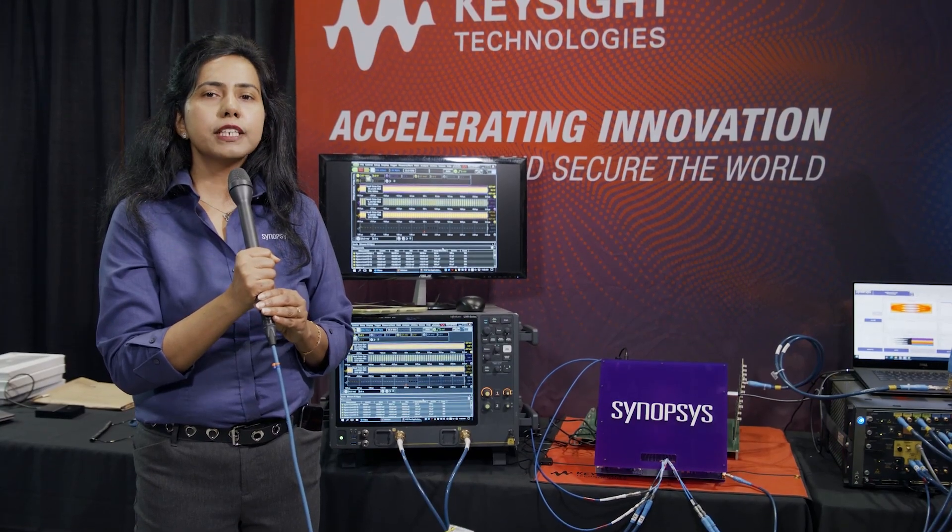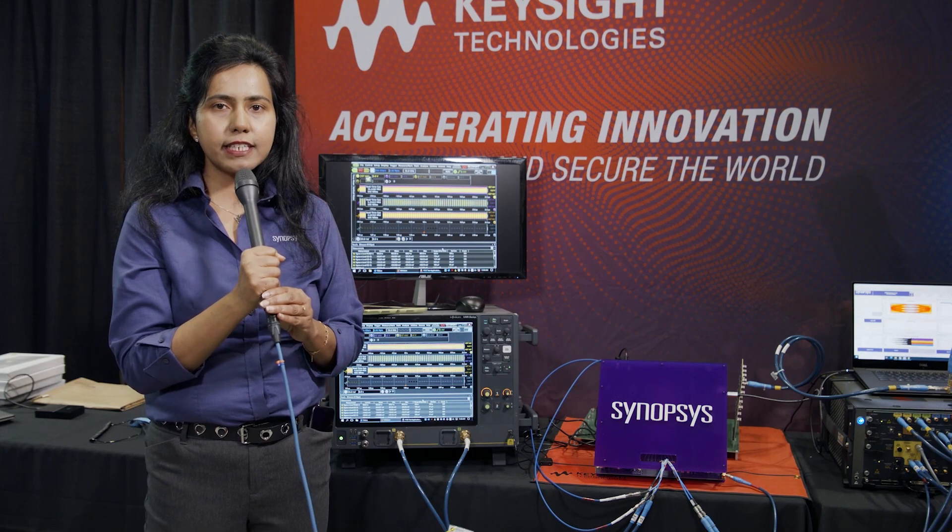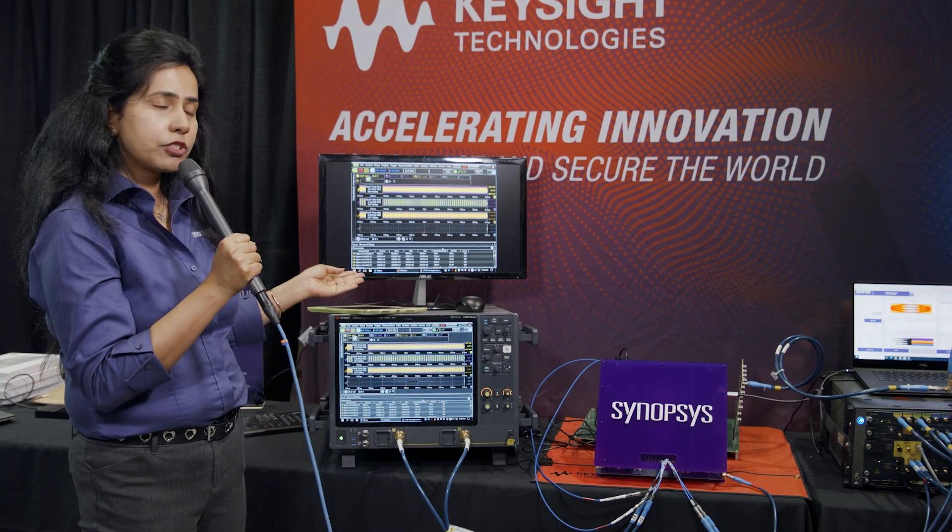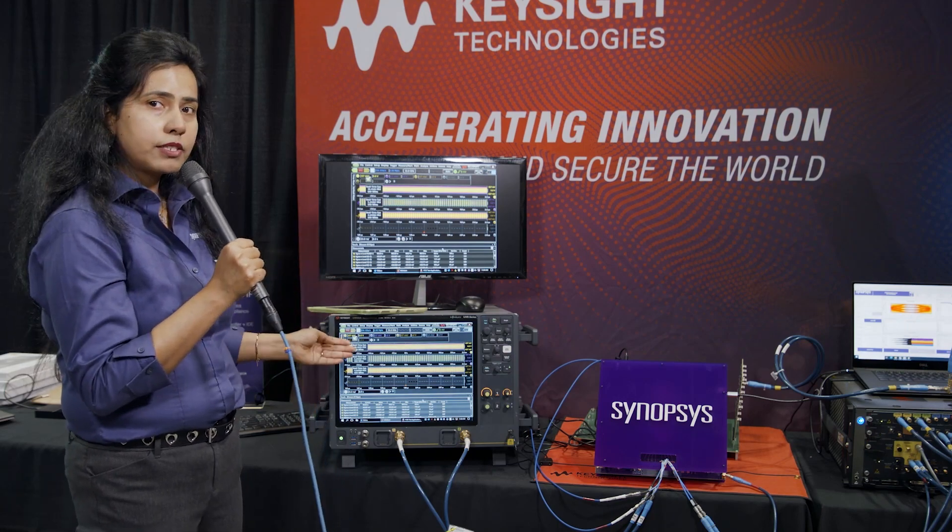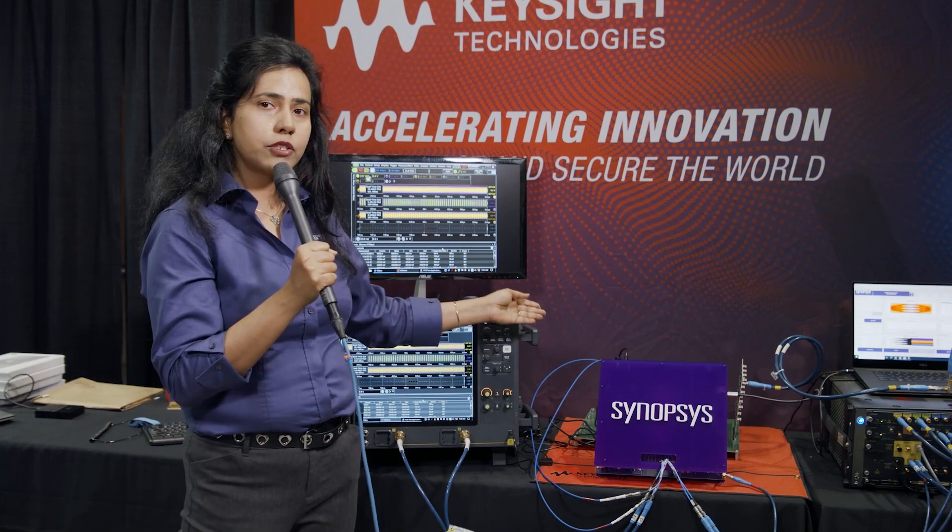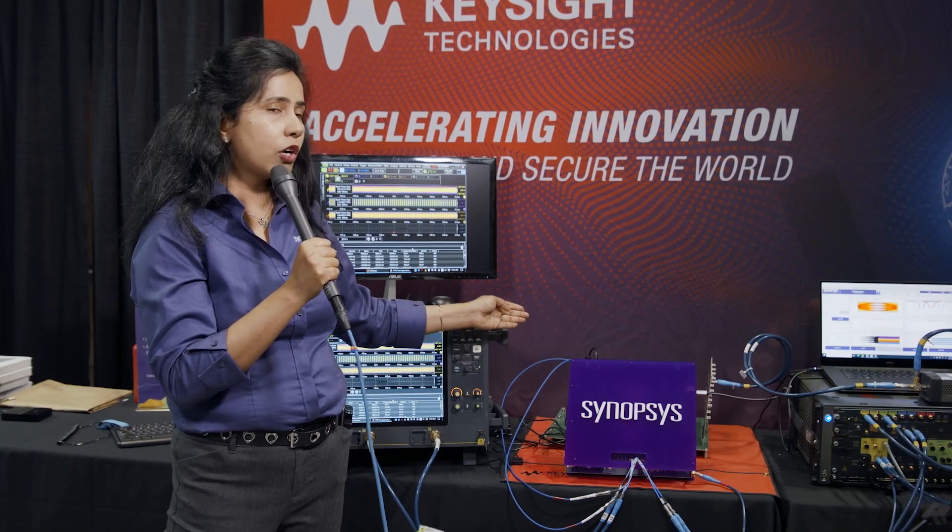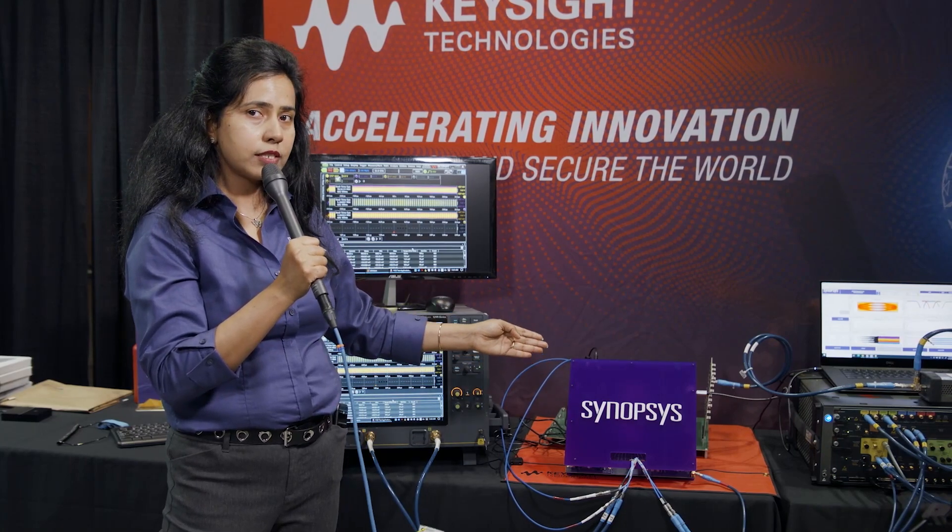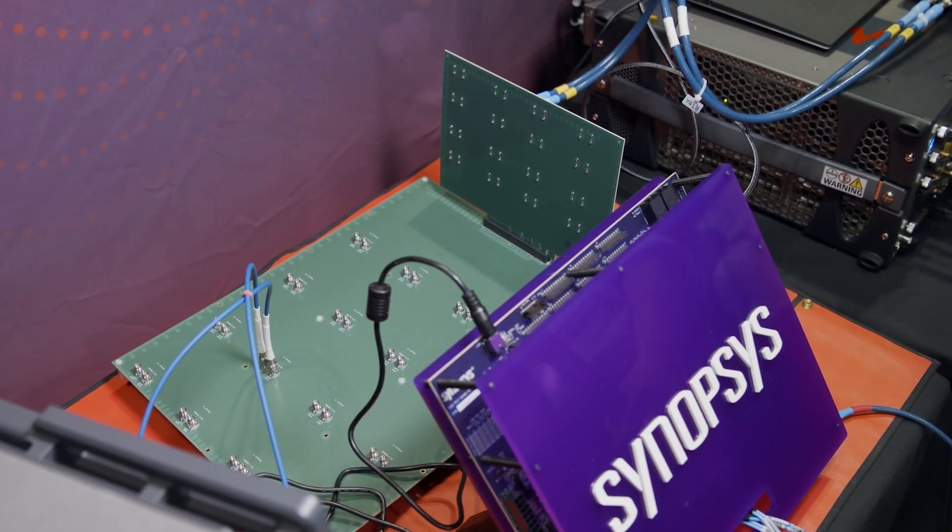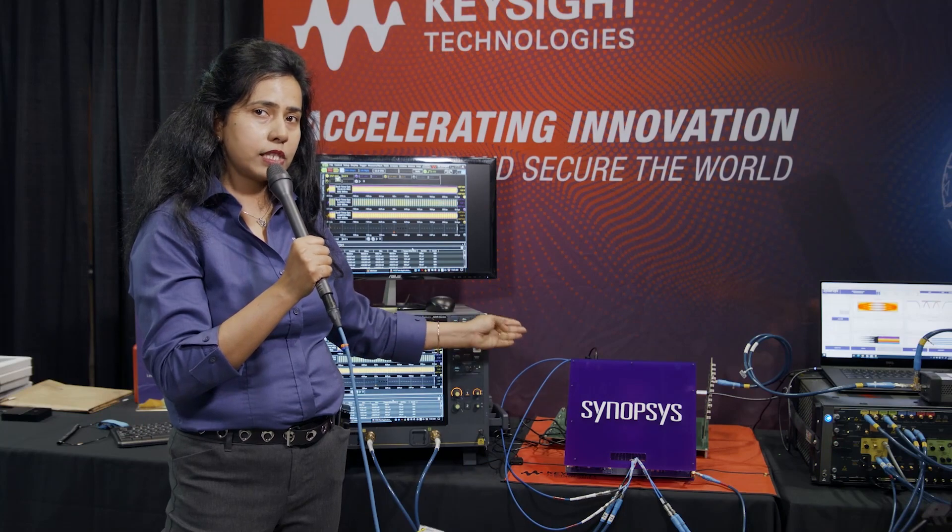We are at Keysight booth. We are showcasing here PCIe Gen 6 receiver compliance testing with Keysight's equipment. The BERT here is transmitting PRBS 31 pattern and it's going to the ISI channel. The ISI channel has the worst case insertion loss and the total insertion loss is 33 dB. It's going to the Synopsys evaluation board which is located inside this purple box. The receiver is equalizing the whole channel.